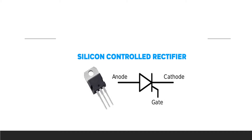This is the symbol of the silicon controlled rectifier, where you can see there is an anode, a cathode, and a gate. There are three terminals present here. You can also see in this figure three terminals representing anode, cathode, and gate.